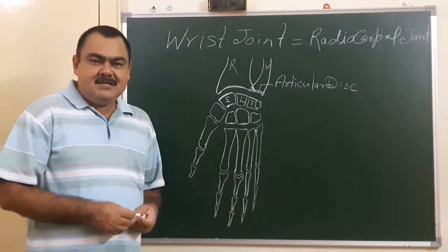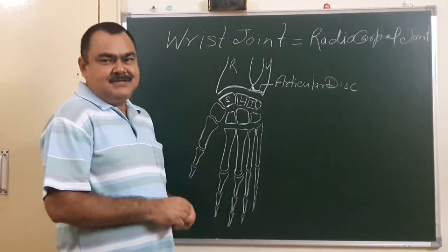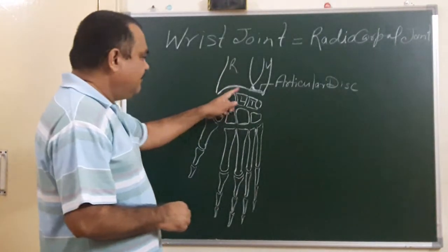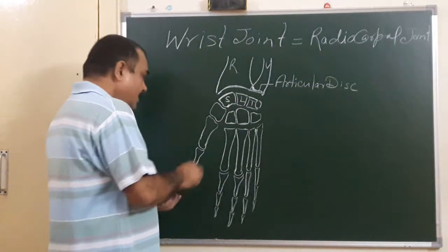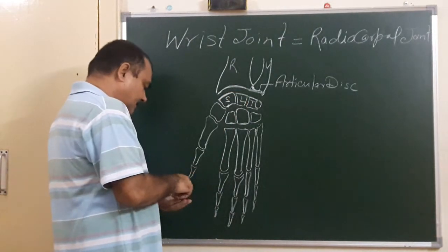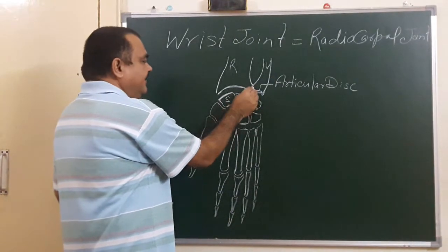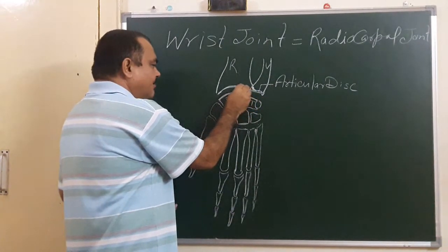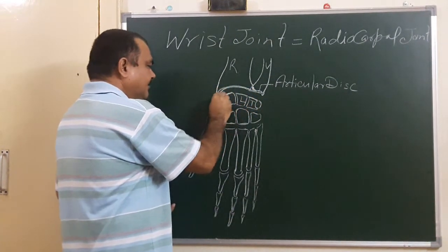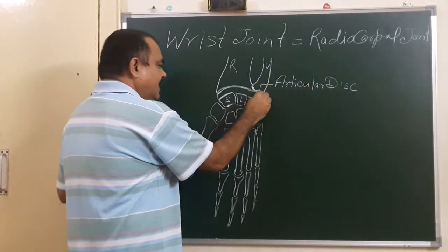The type of the joint is synovial and its variety is ellipsoid. These are the articular surfaces, and the capsule of the joint is attached to the margin of this articular surface.